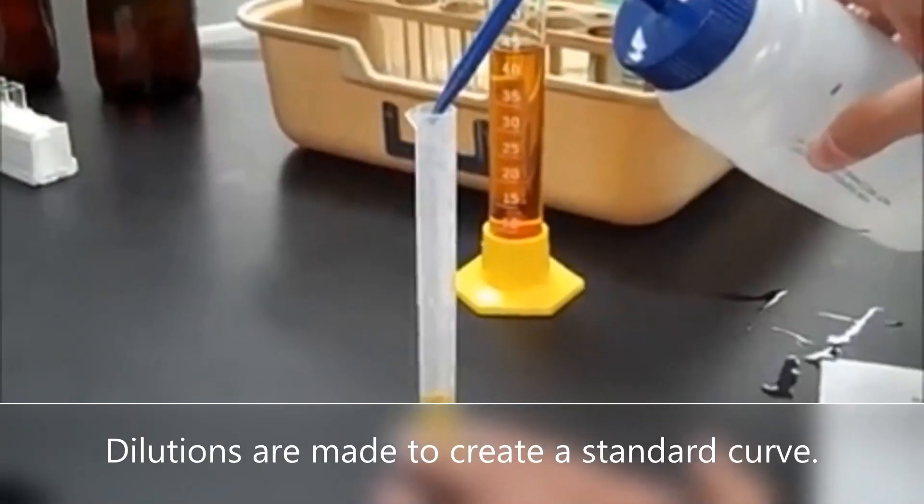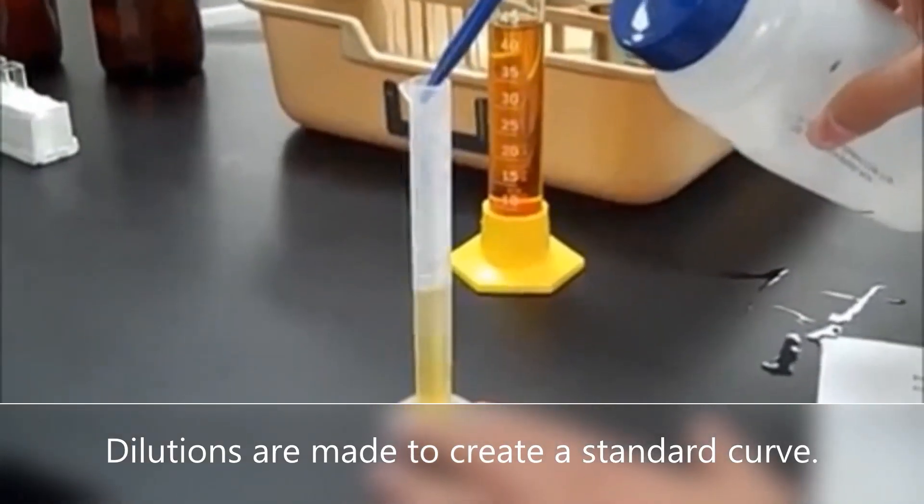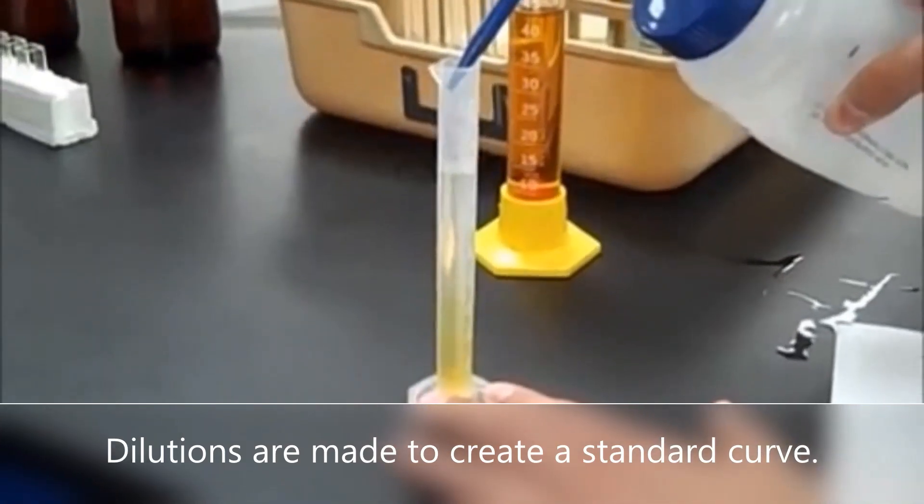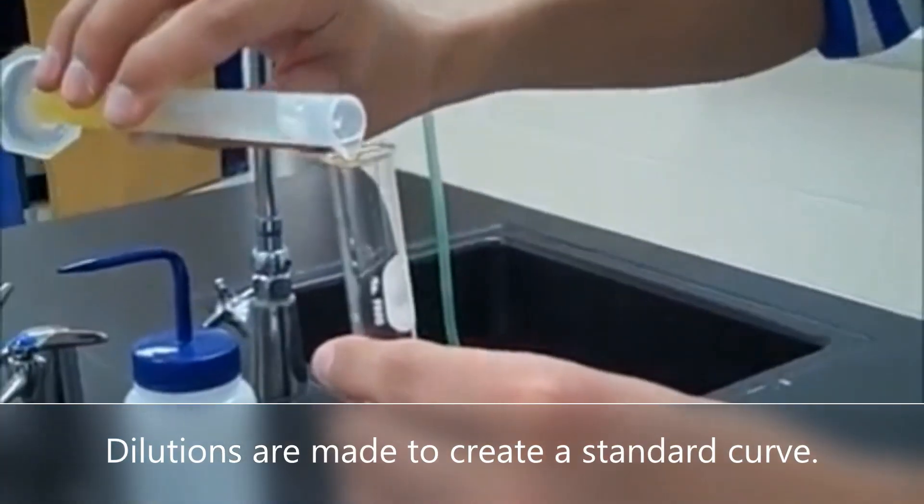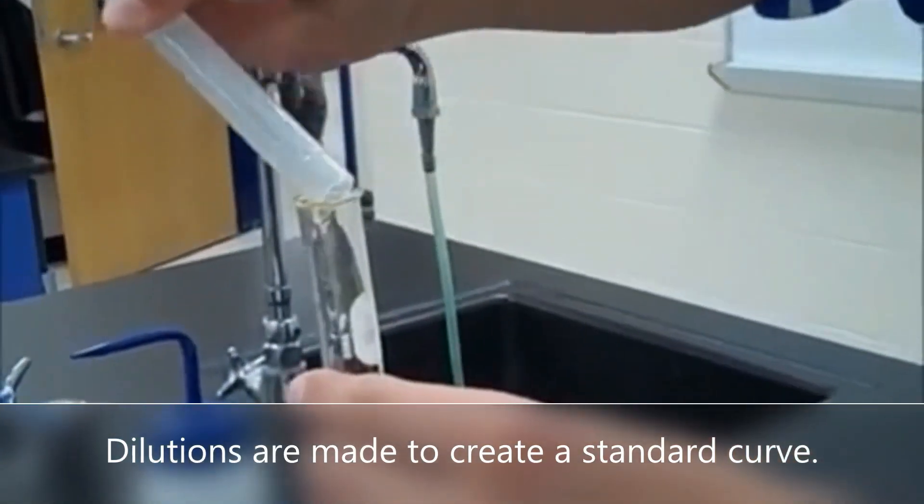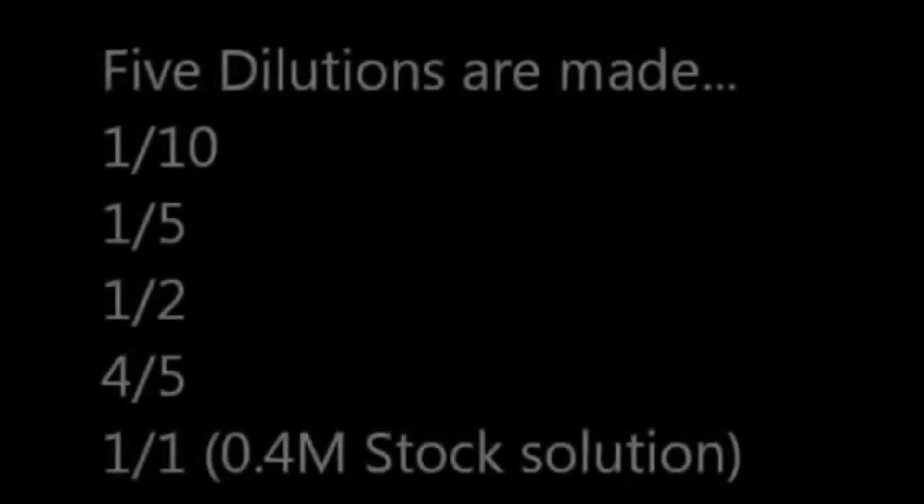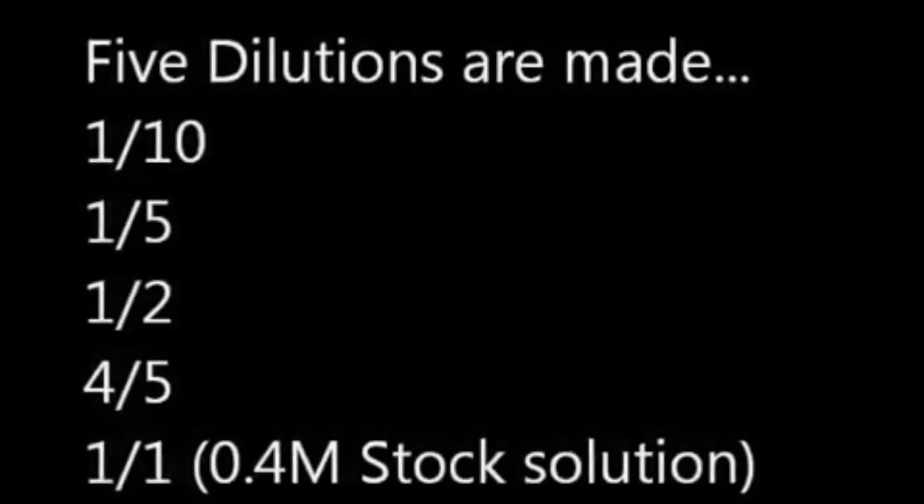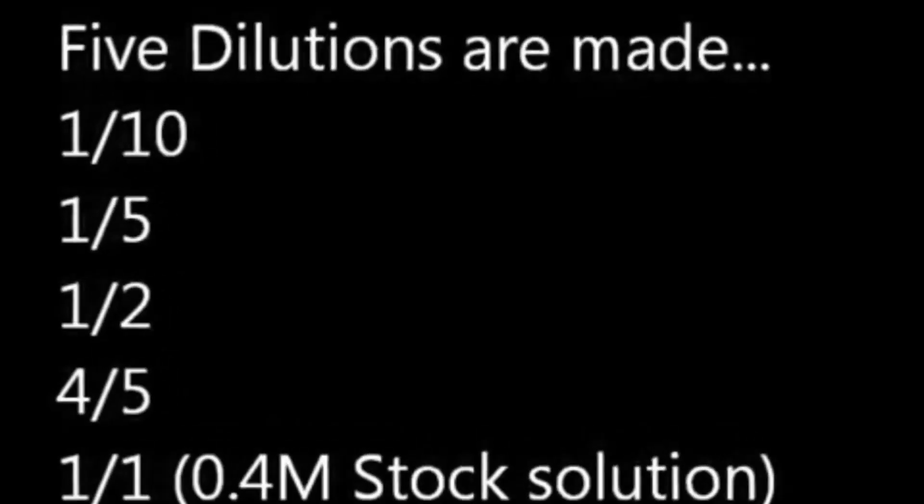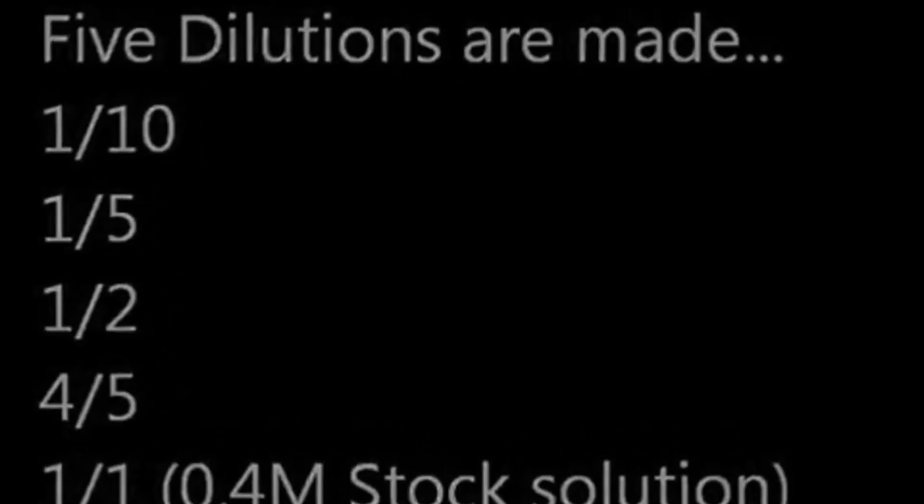A one-tenth dilution is created by diluting one milliliter of stock solution to a new volume of 10 mils. I'll add a link to a video which discusses dilution calculations. Five dilutions are created to give samples of 0.04, 0.08, 0.2, 0.32, and 0.4 molar iron chloride.